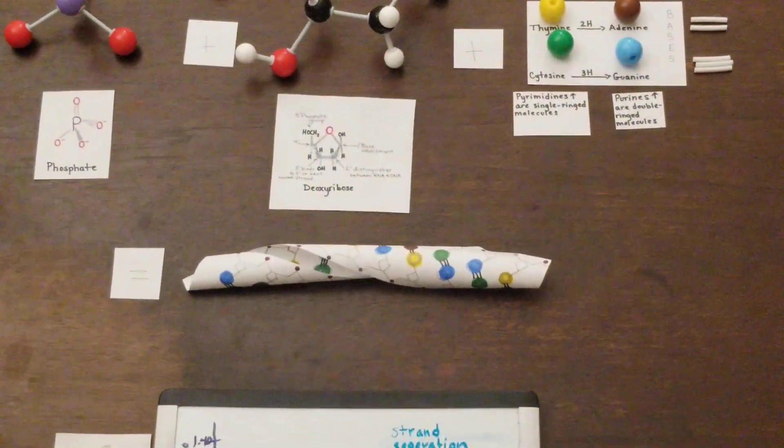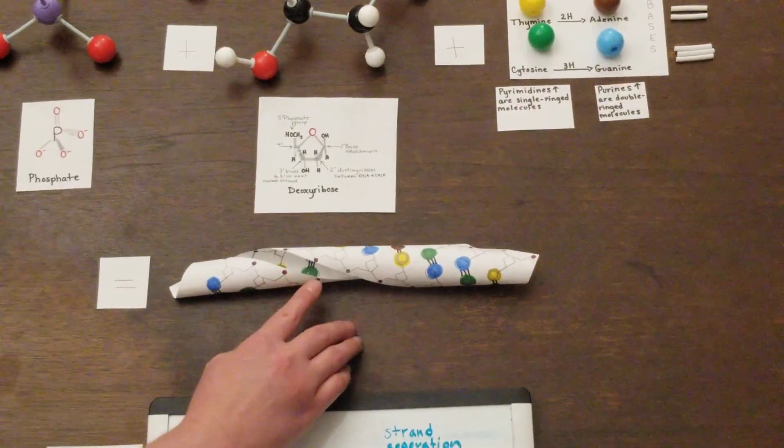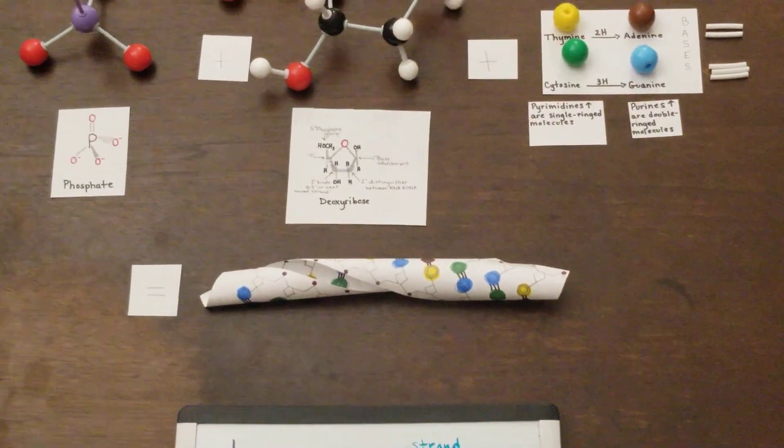The phosphodiester bonds make up the phosphate backbone of the DNA and are responsible for its negative charge. The backbone is also hydrophilic.